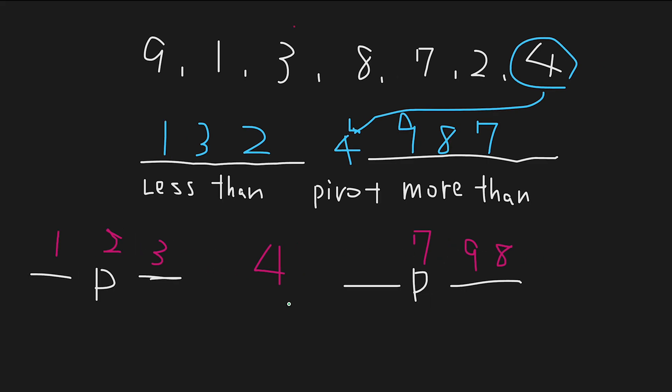In the third process, we apply the same algorithm again. But look at this part: 1, 2, 3, 4, 7. They are already sorted, so we only apply the algorithm here on 9 and 8. I take 8 as the pivot. 9 is more than 8, so I put 9 here.